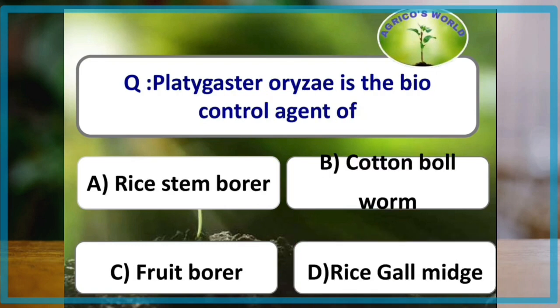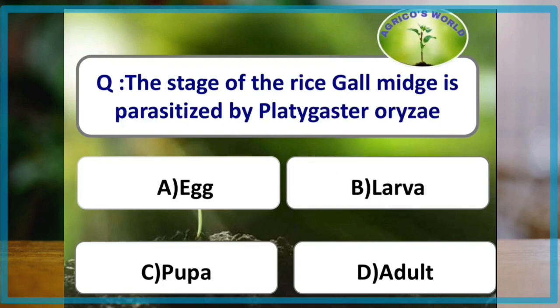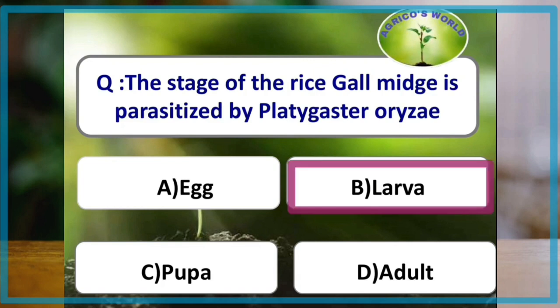Platygaster oryzae is a biocontrol agent of which pest? The answer is rice gall midge. The stage of rice gall midge that is parasitized by Platygaster oryzae is the larval stage.